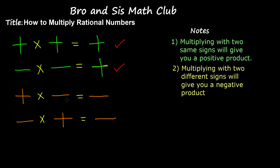Now, multiplying with two different signs will give you a negative product. So when you multiply a positive number by a negative number, you are going to get a negative product. And if you do the reverse — if you multiply a negative number by a positive number — then you are also going to get a negative product.